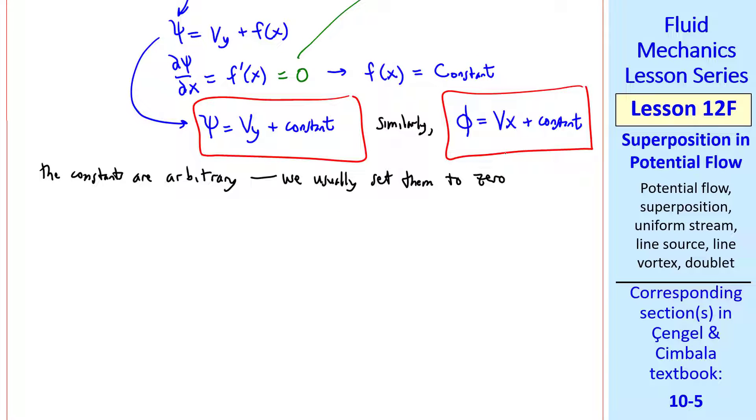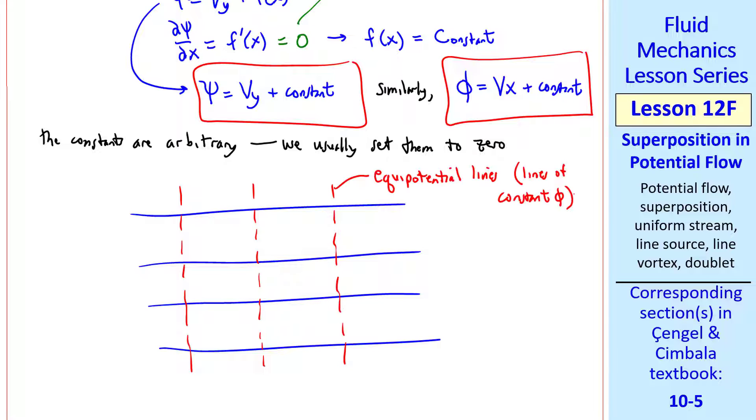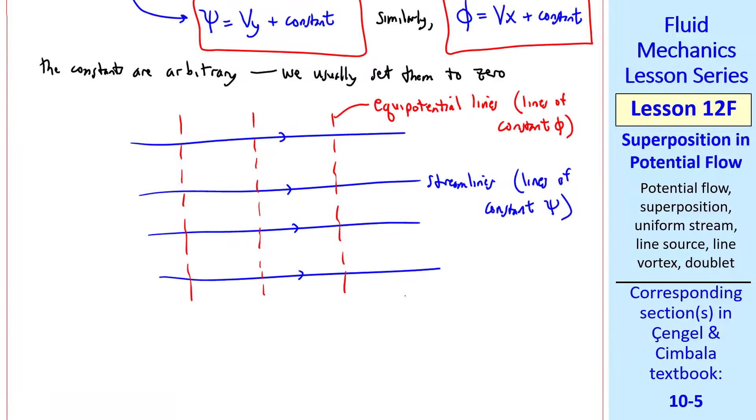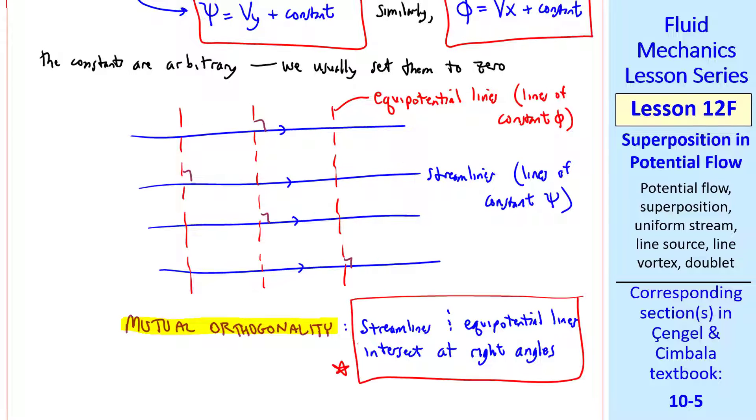In all these flows, I'll plot the streamlines as solid blue lines, and the lines of constant phi as dashed red lines. These are called equipotential lines, or actually curves, which are lines of constant phi. The streamlines, as you know, are lines or curves of constant psi. Notice that these intersect at right angles, everywhere. This is called the principle of mutual orthogonality. That is, streamlines and equipotential lines always intersect at right angles. This turns out to be true for any potential flow.